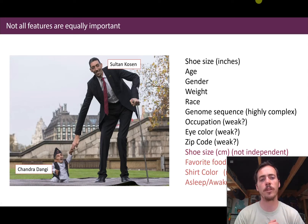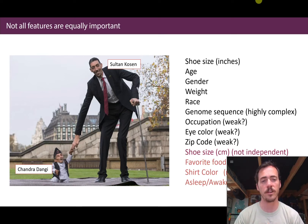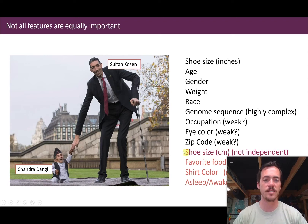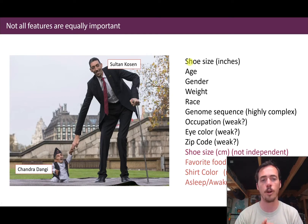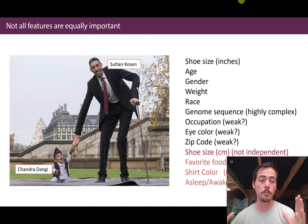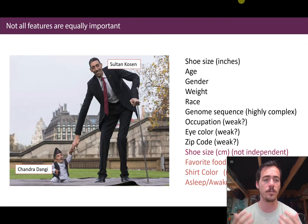Shoe size in centimeters and inches are not independent of one another — it's the exact same information just transformed, so that's not helping our model, it's just confusing it. Having multiple features giving the same information also messes with our ability to figure out how much of the prediction is due to which features. Age is going to be a good predictor of height — young people grow over the course of their lifetime and then actually shrink a little when they get older. Gender is important because males and females have very different heights, and we know weight is correlated with height.